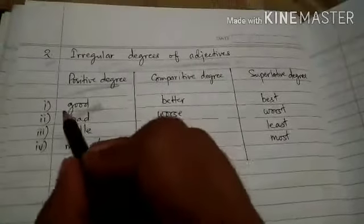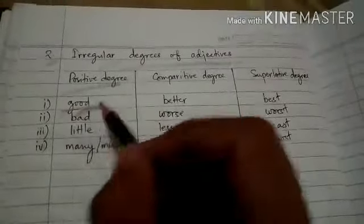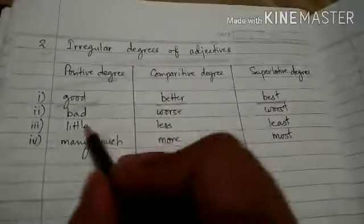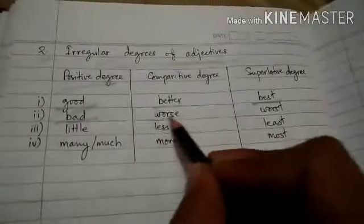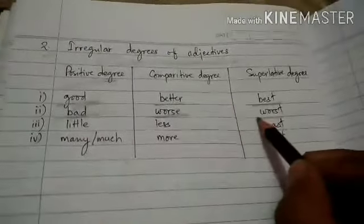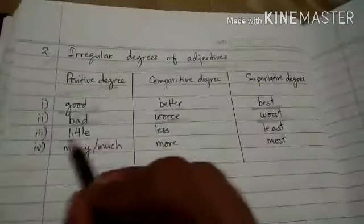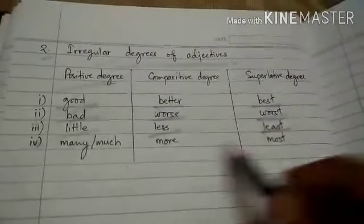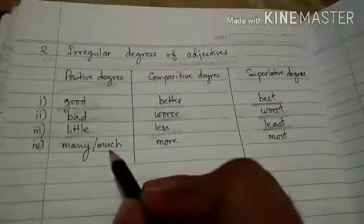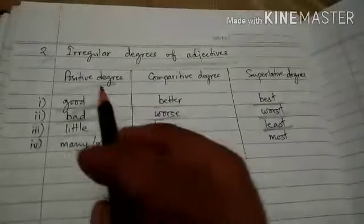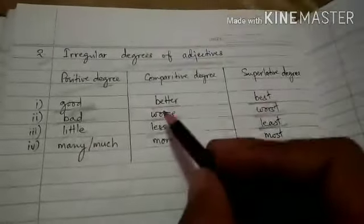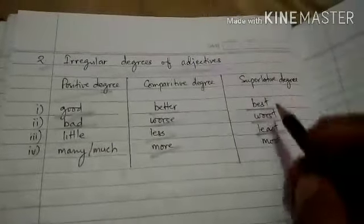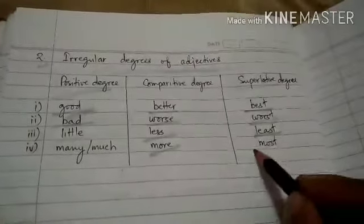For example: 'good' is positive degree, 'better' is comparative degree, and 'best' is superlative degree. 'Bad' is positive, 'worse' is comparative, 'worst' is superlative. 'Little' is positive, 'less' is comparative, 'least' is superlative. 'Many' or 'much' are both positive degree; when changed to comparative degree, we use 'more,' and when changed to superlative degree, we use 'most.'